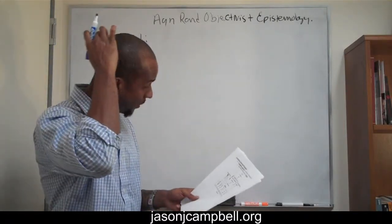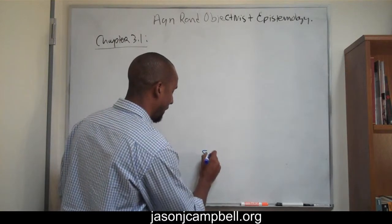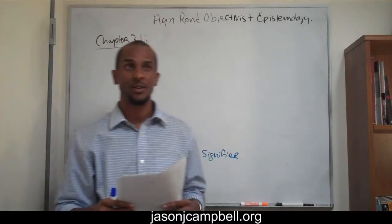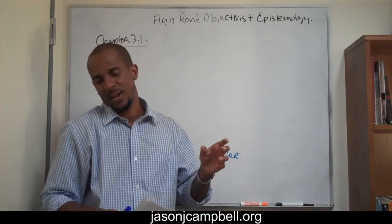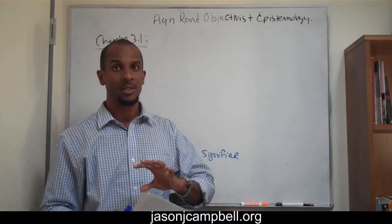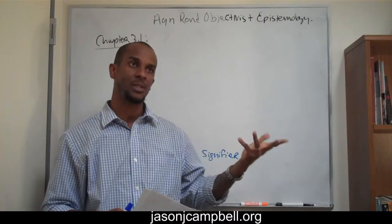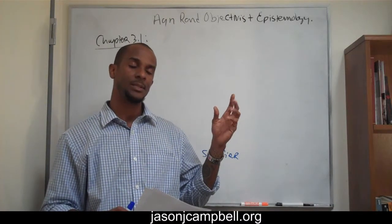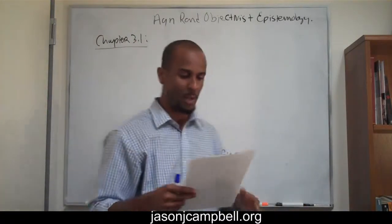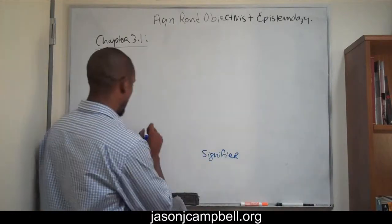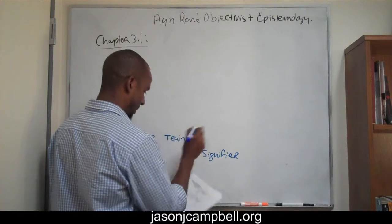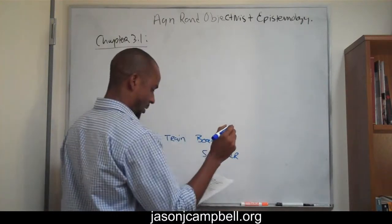So I'm going to start with the signifiers. Remember, there are two schools of thought with signifiers: those linguists who believe signifiers are objective realities in the world, and those who believe they are not. For Rand, she's part of the group that believes signifiers are physical things in the world. So let's look at a few signifiers — the signifier car, train, boat, motorcycle.